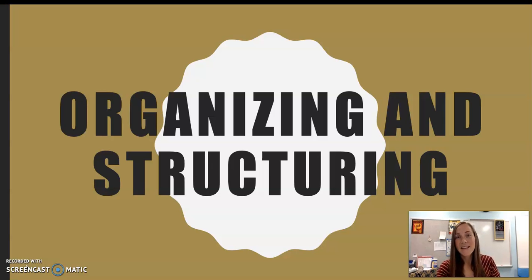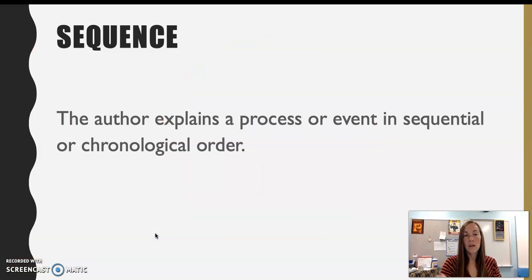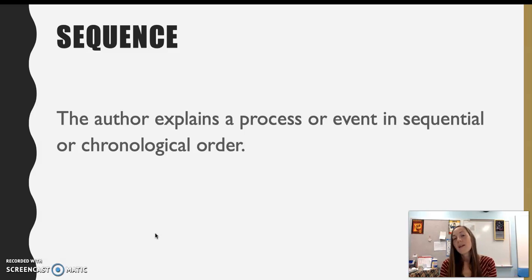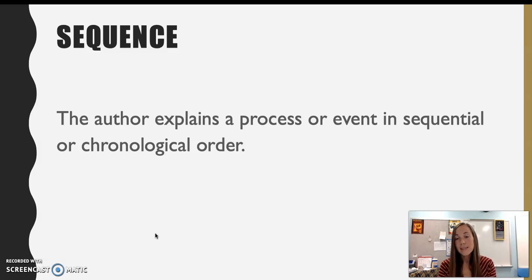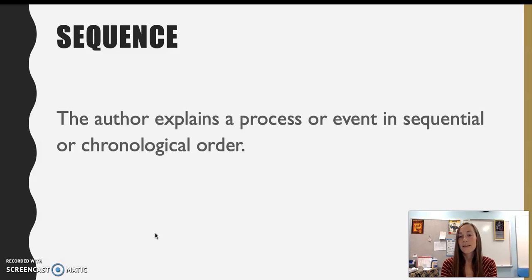Some patterns are better for certain topics and some might not work for others. One style you can use is sequencing — when we sequence, we put things in order: one, two, three, four. The author explains a process step-by-step, or places things in chronological order, which is by time. You will see this a lot in how-to writing, step-by-step instructions, or the timeline of an event or a person.